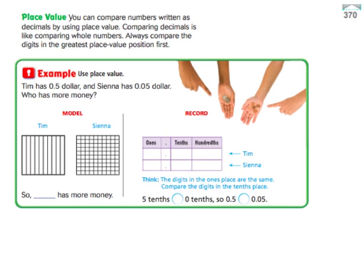Now switching over to page 370, we have another way to compare decimals. It says you can compare numbers written as decimals by using place value. Comparing decimals is like comparing whole numbers. Always compare the digits in the greatest place value position first.